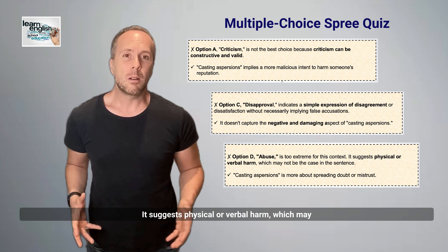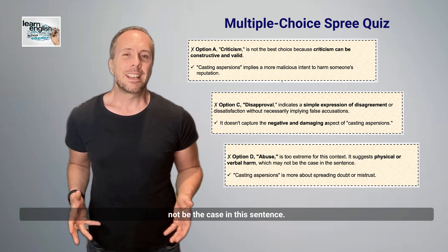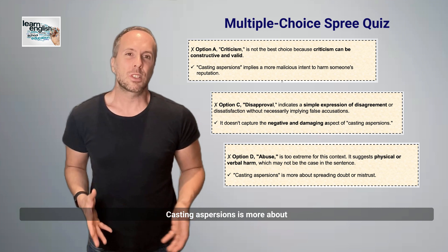Option D, abuse, is way too extreme for this context. It suggests physical or verbal harm, which may not be the case in this sentence. Casting aspersions is more about spreading doubt or mistrust.